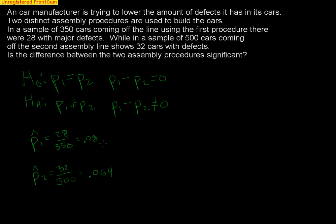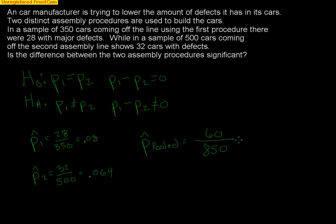Here's the key idea: when running this test, we assume the whole time that there's truly no difference — that procedure one and procedure two are completely identical. So we create what's called a P-hat pooled, or P-hat total. If we assume both procedures are the same, why have two separate samples? Let's put them all together: 28 defective cars plus 32 defective cars gives 60 defective cars out of a total of 850 cars (350 + 500), giving a pooled proportion of 0.0706.